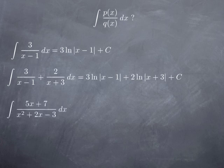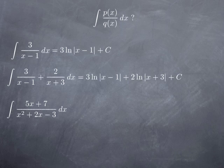Now what if we look at a more complicated rational function? Let's say we want to integrate (5x + 7) divided by (x² + 2x − 3). We may try integration by substitution, but that works only if the numerator is a constant multiple of the derivative of the denominator. Differentiating x² + 2x − 3 gives 2x + 2, and 5x + 7 is not a constant multiple of that, so substitution doesn't work.